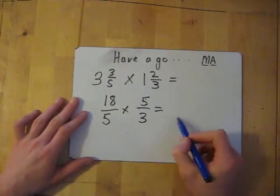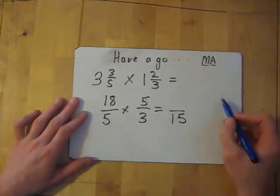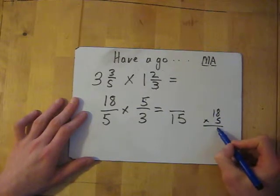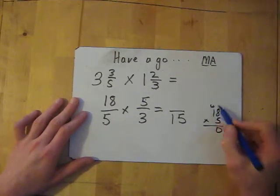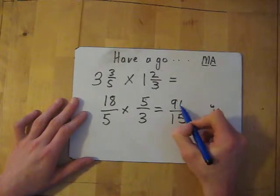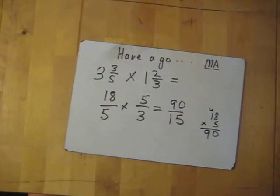So, multiply the bottom, multiply the top. 5 times 3 is 15. 18 times 5 gives me 5 times 8 is 40, 5 times 10 add the 4 is 90. So, my answer is 90 over 15. That's it.